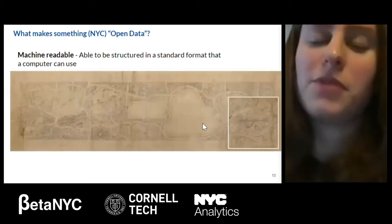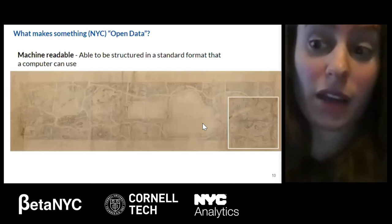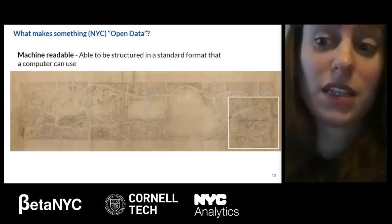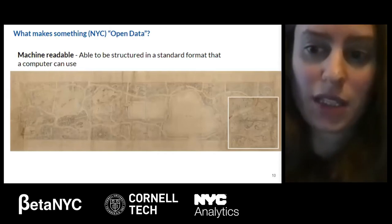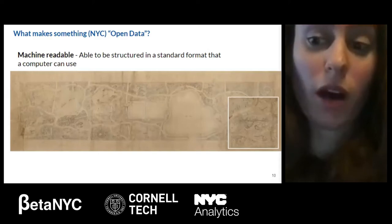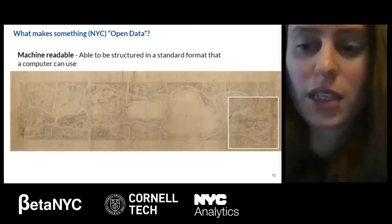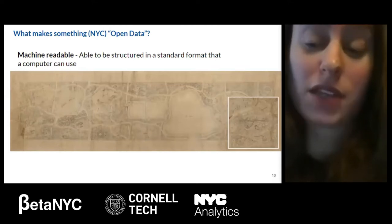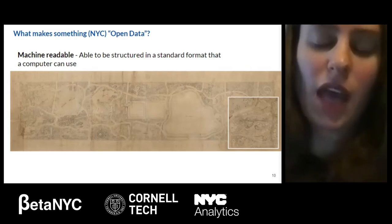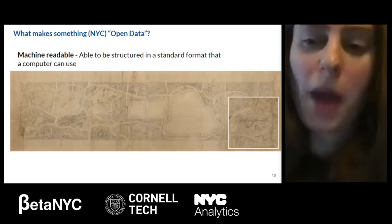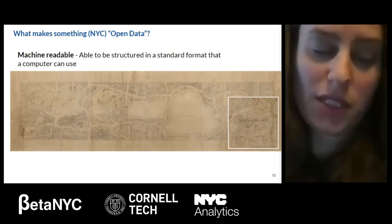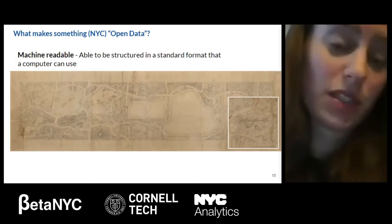So what makes something NYC Open Data? The first criteria is that the information needs to be machine readable — something presented in a table with rows and columns, or in a standardized format a computer can understand. This can include maps. For example, there's a map of New York City trees on open data, and accompanying it is a table where each row is a tree with columns for the tree's species, size, and latitude and longitude. But a map like the original plan for Central Park, which doesn't have an equivalent table, would not be on the open data website because it's not machine readable.